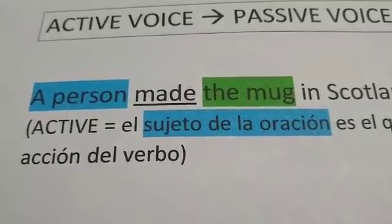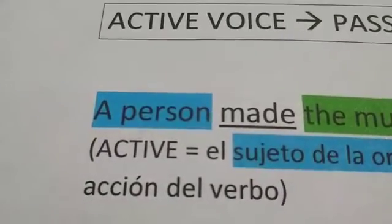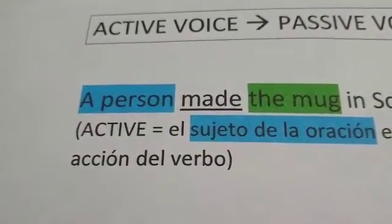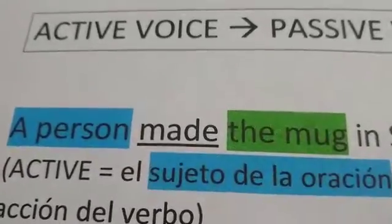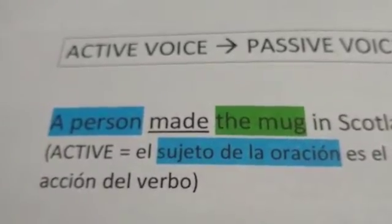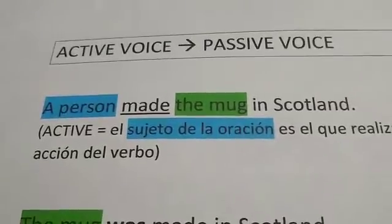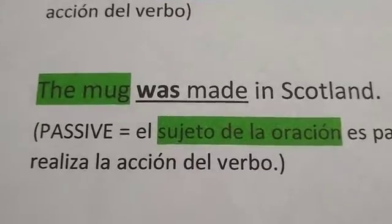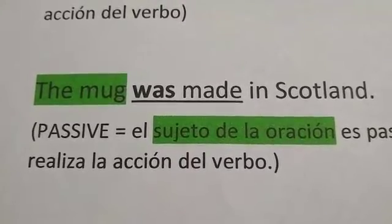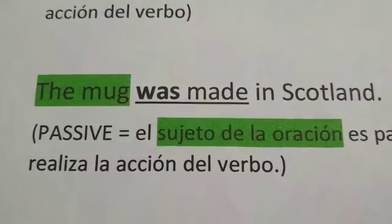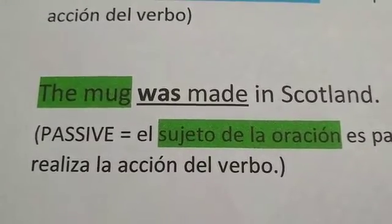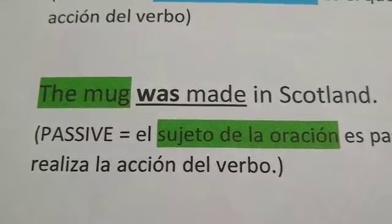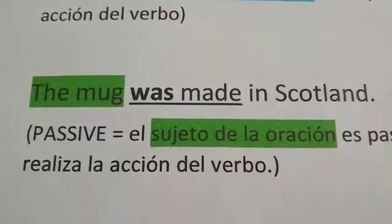A person, the subject of the sentence, is the doer of the action. The person made the mug. In the sentence 'the mug was made in Scotland,' the mug, the subject of the sentence, is not doing anything. It is not the doer of the action.